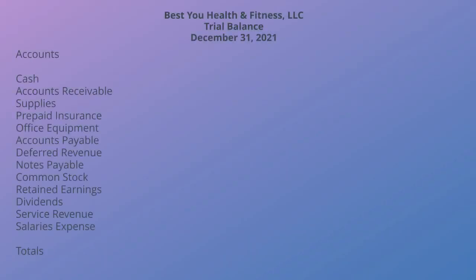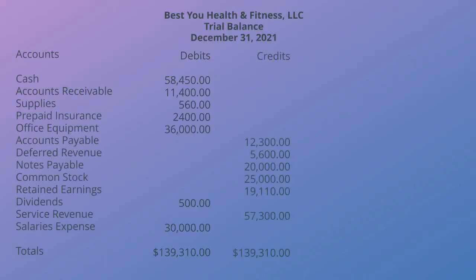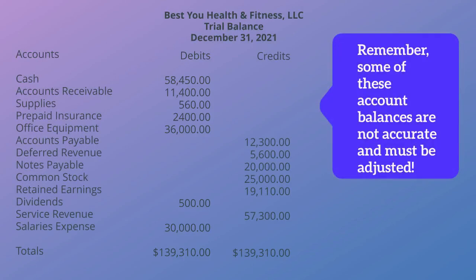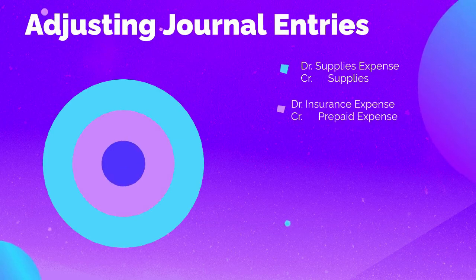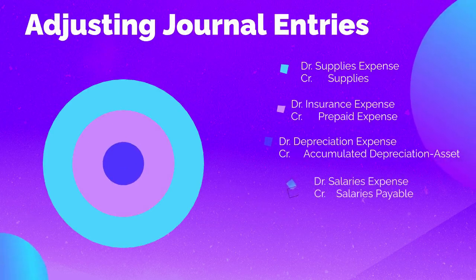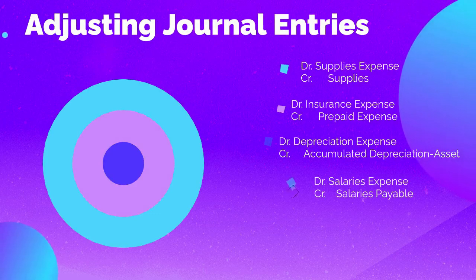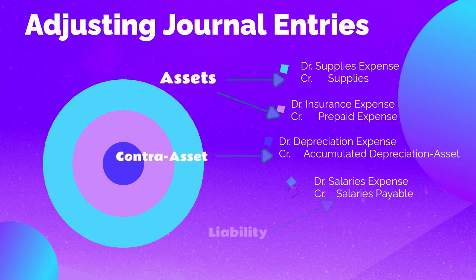Let's look at the trial balance for Best U Health and Fitness. Some of these account balances are not accurate and must be adjusted, like supplies, prepaid insurance, and salaries expense, just to name a few. Here are the journal entries used for the adjustments you learned to calculate in your last module. Remember, when you adjust, you will debit an expense account and you will credit either an asset or a liability account.